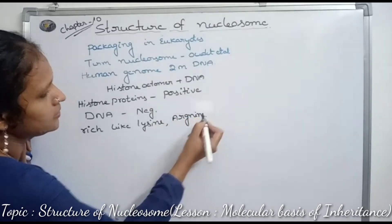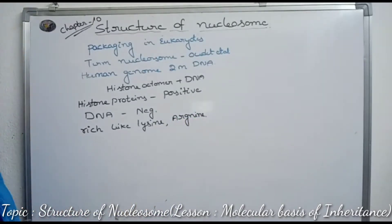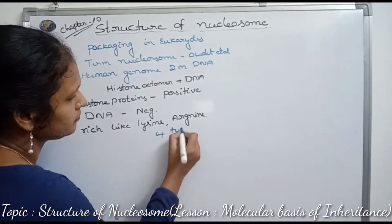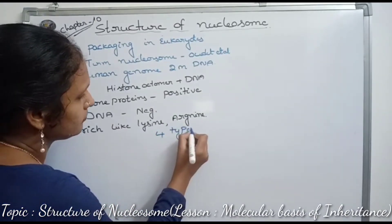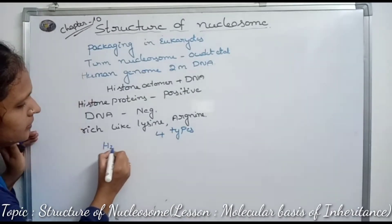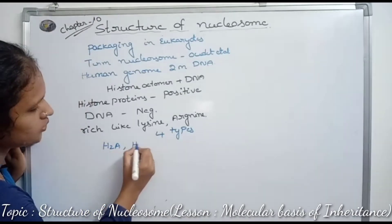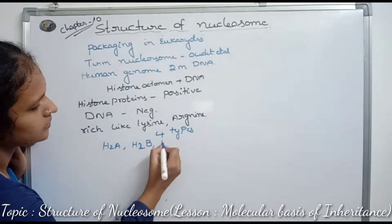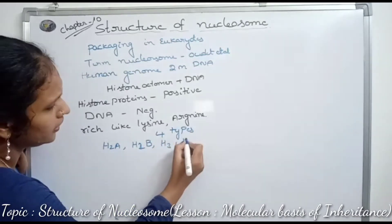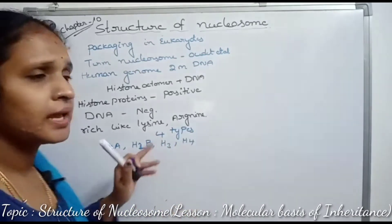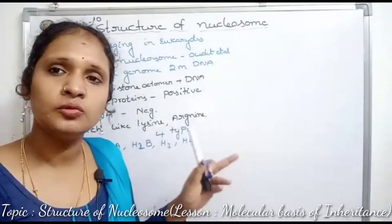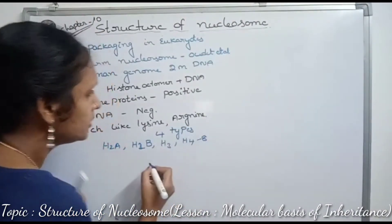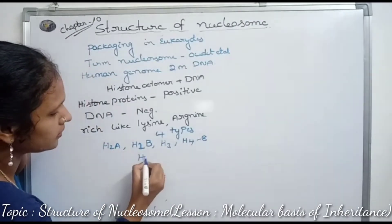Histone proteins are basically four types: H2A, H2B, H3, and H4. These four are again repeated to form 8, so totally histone proteins are 8, forming the histone octamer.